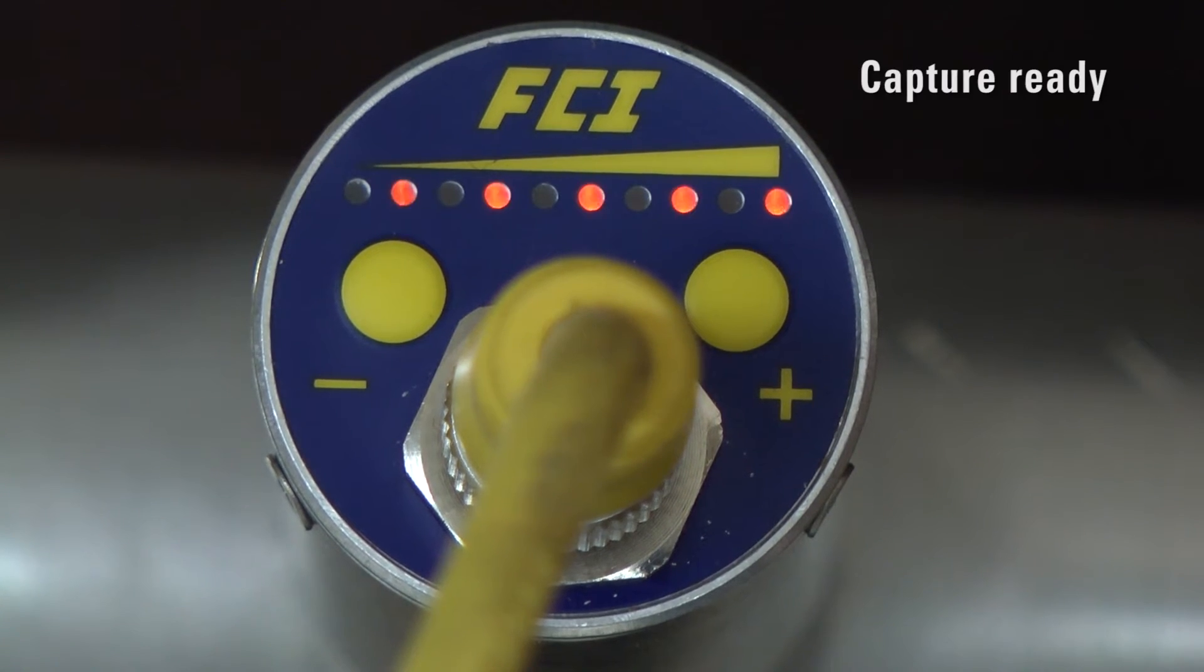The LED pattern will change to alternating LEDs flashing, indicating the unit is in capture ready mode. Throttle the flow to the desired alarm setpoint, or if not possible, adjust the flow as close as possible to the desired setpoint.